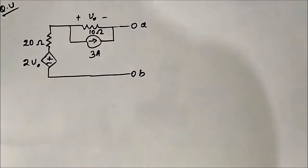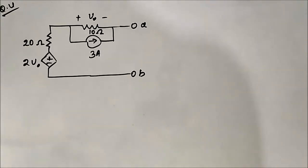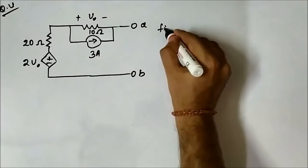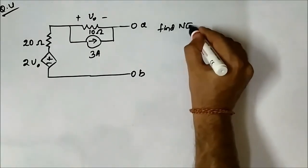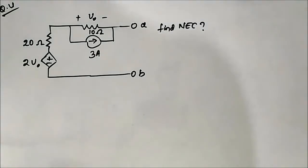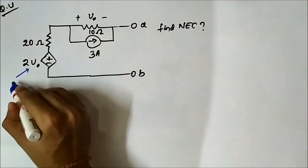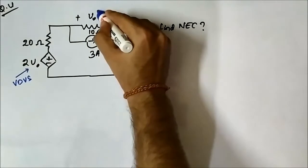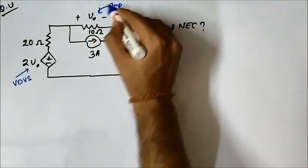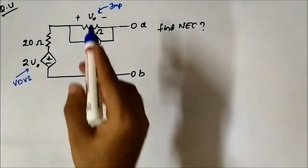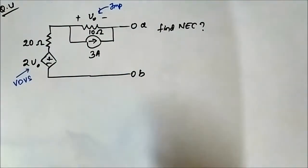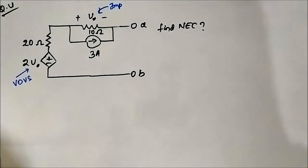Hello friends. This is the fourth question related to Norton equivalent circuit determination in circuits where there is a dependent source. We have to find the Norton equivalent circuit across the terminals A and B. Here this is the dependent source — a voltage dependent voltage source — and this is the circuit variable, which is the voltage drop across this 10 ohm resistor. We have to find the Norton current and Norton resistance.